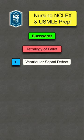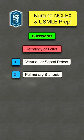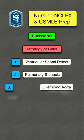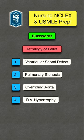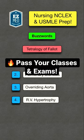The tetrad for Tetralogy of Fallot includes a ventricular septal defect, pulmonary stenosis, overriding aorta, and right ventricular hypertrophy.